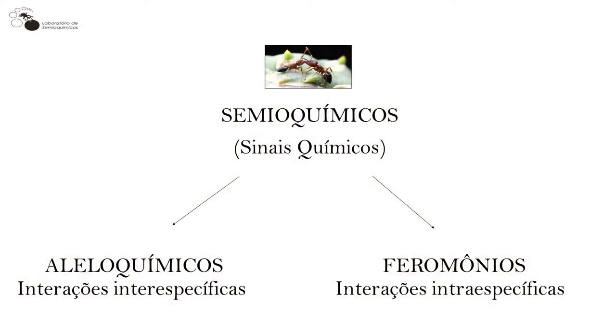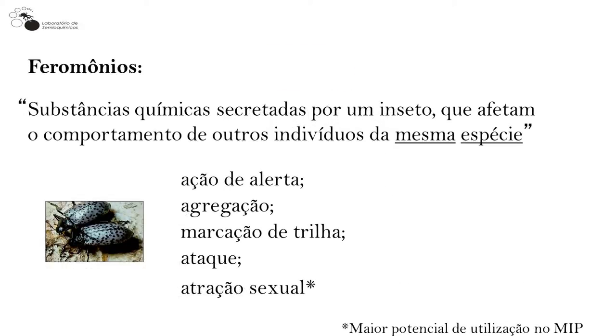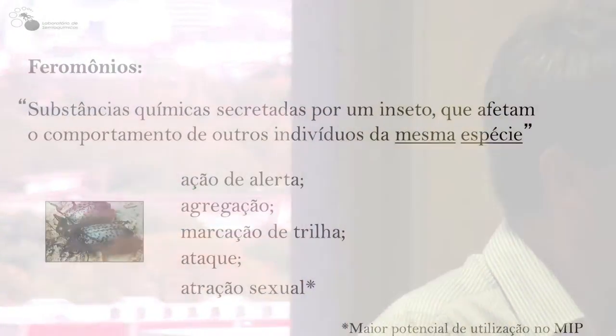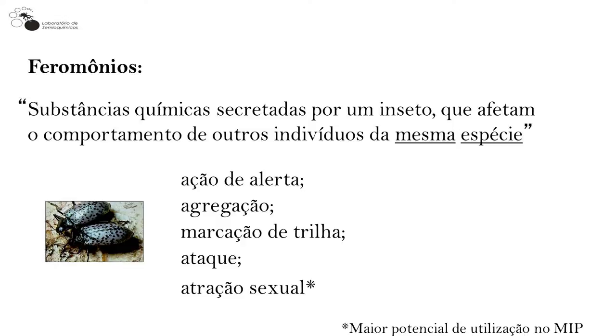O segundo grupo são os feromônios, responsáveis pelas interações intraespecíficas, ou seja, entre indivíduos de uma mesma espécie. Feromônios são substâncias químicas secretadas por um inseto que afetam o comportamento de outros indivíduos da mesma espécie. Vários comportamentos são mediados por feromônios: alerta, agregação, marcação de trilha — como formigas que marcam o caminho até a fonte de alimento — feromônios de ataque em abelhas e insetos sociais, e feromônios de atração sexual, que apresentam maior potencial de utilização no manejo integrado de pragas (MIP).